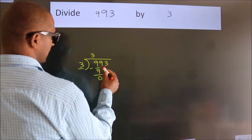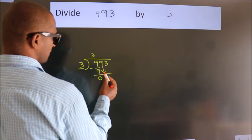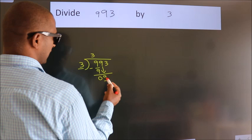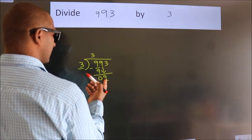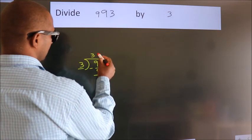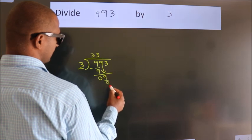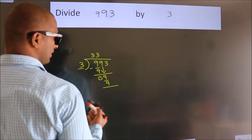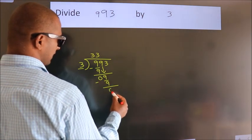After this, bring down the beside number. So, 9 down. When do we get 9? In the 3 table, 3 times 3 is 9. Now, we subtract and get 0.